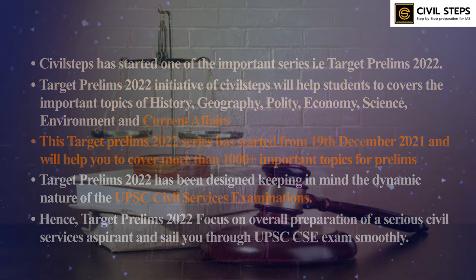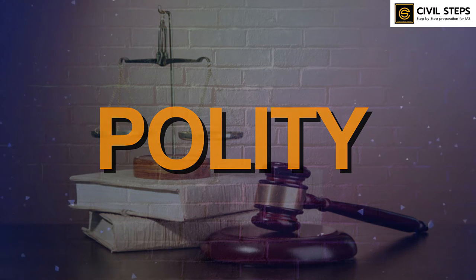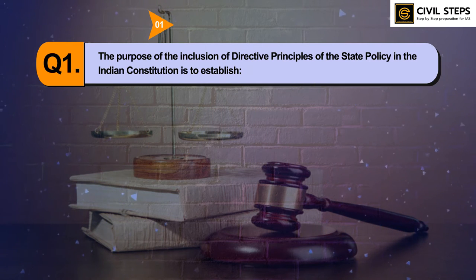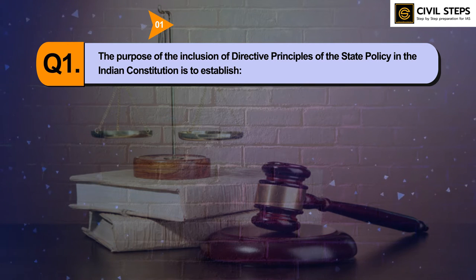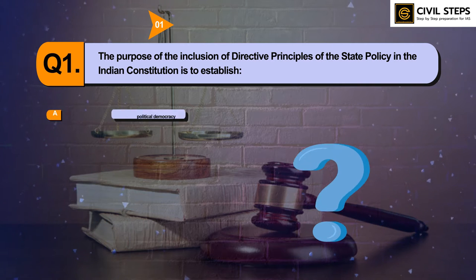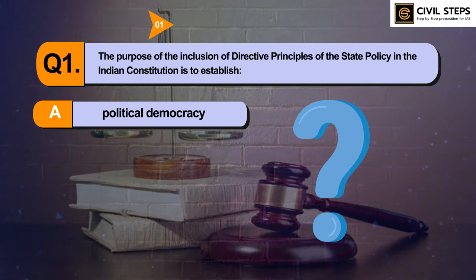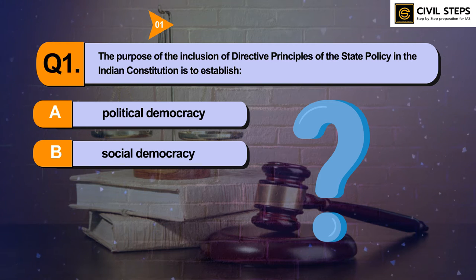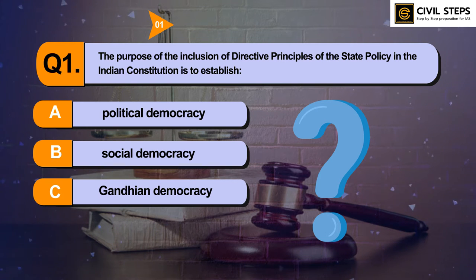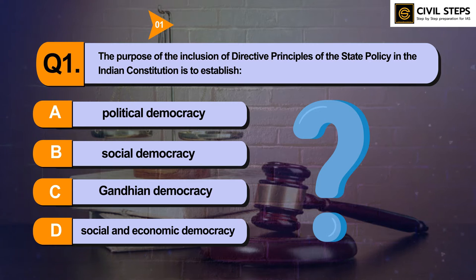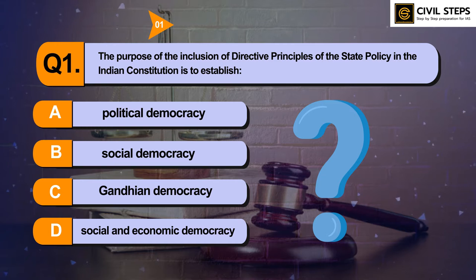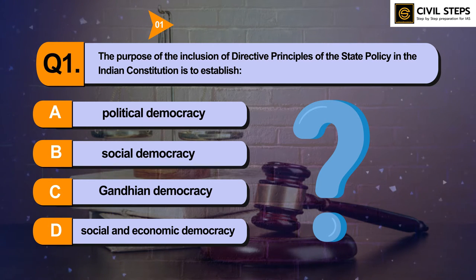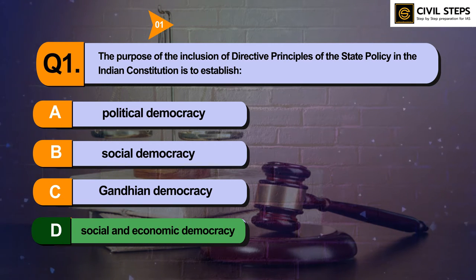Today we will talk about MCQs of Polity. The first question is: the purpose of the inclusion of Directive Principles of State Policy in the Indian Constitution is to establish what? Option A: Political Democracy. Option B: Social Democracy. Option C: Gandhian Democracy. Option D: Social and Economic Democracy. The answer of this question is Option D, Social and Economic Democracy.